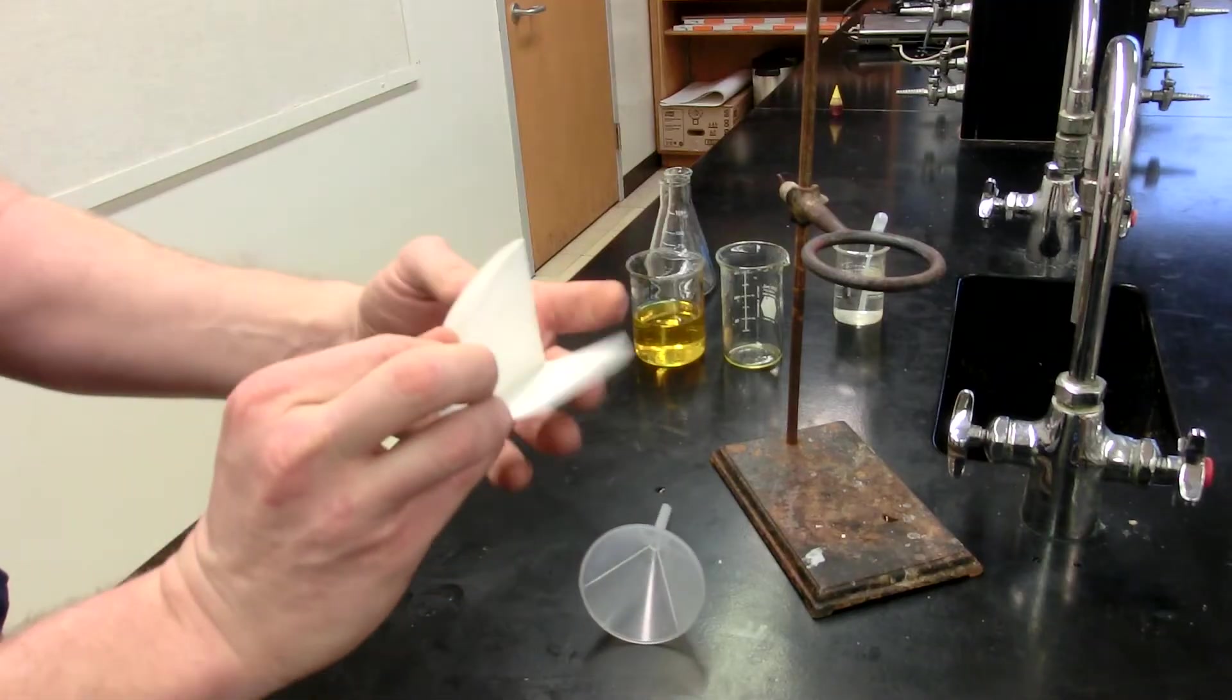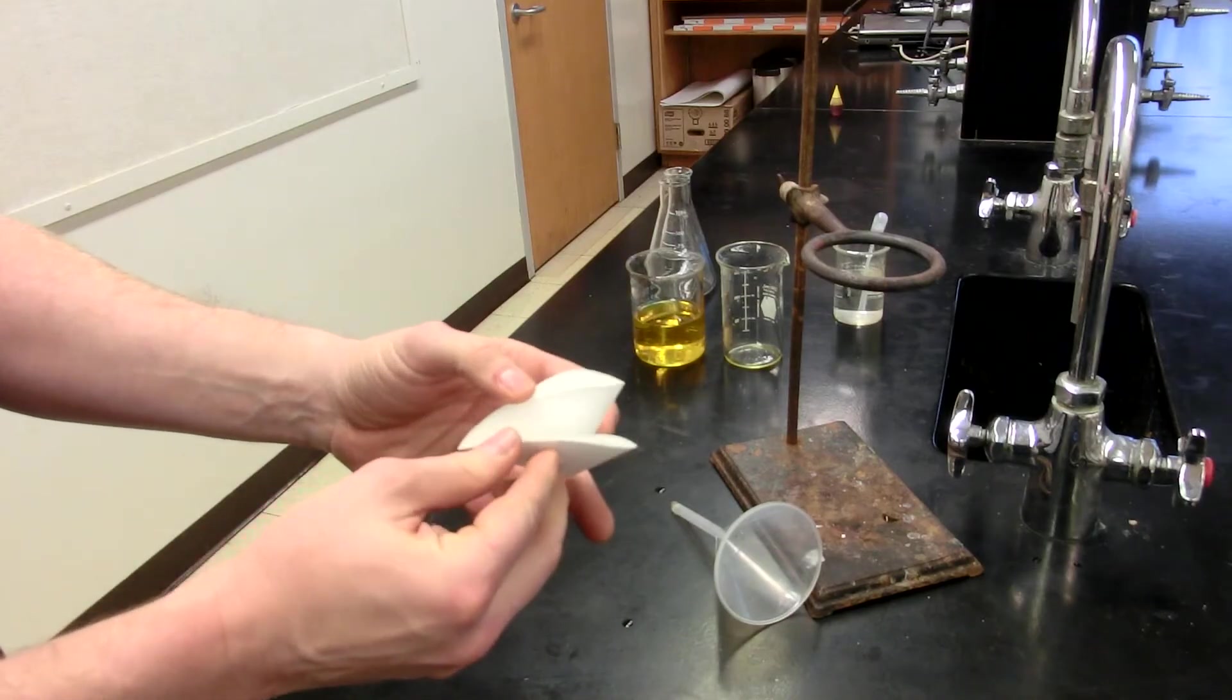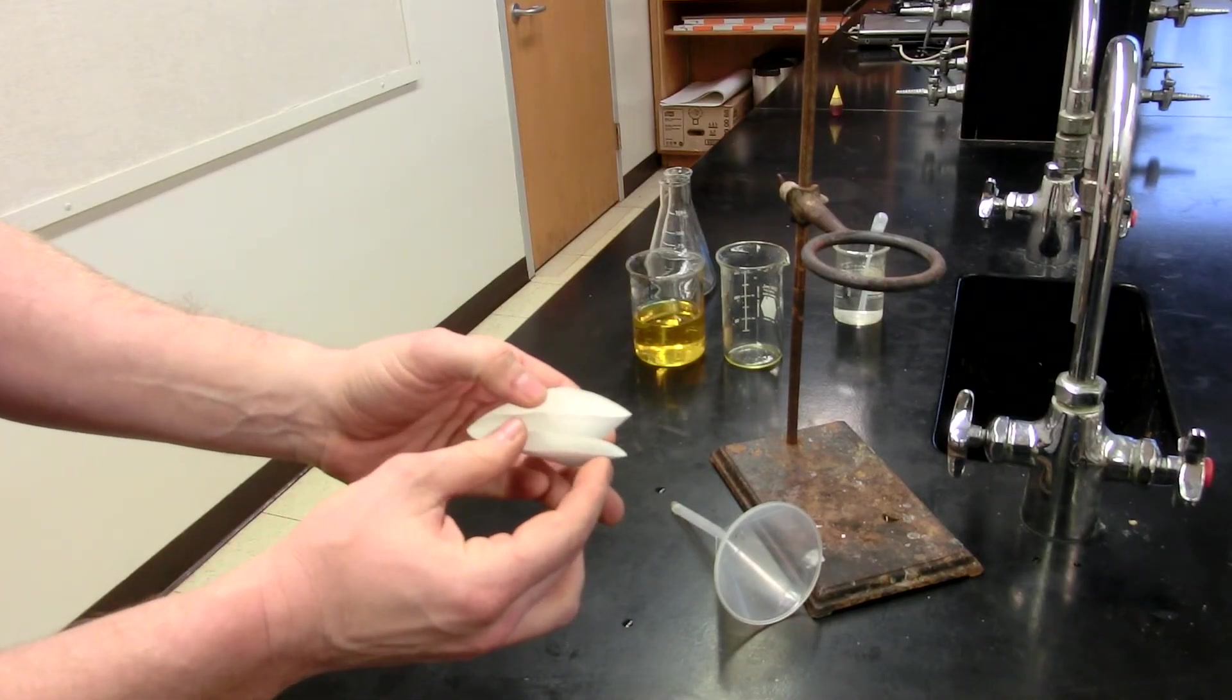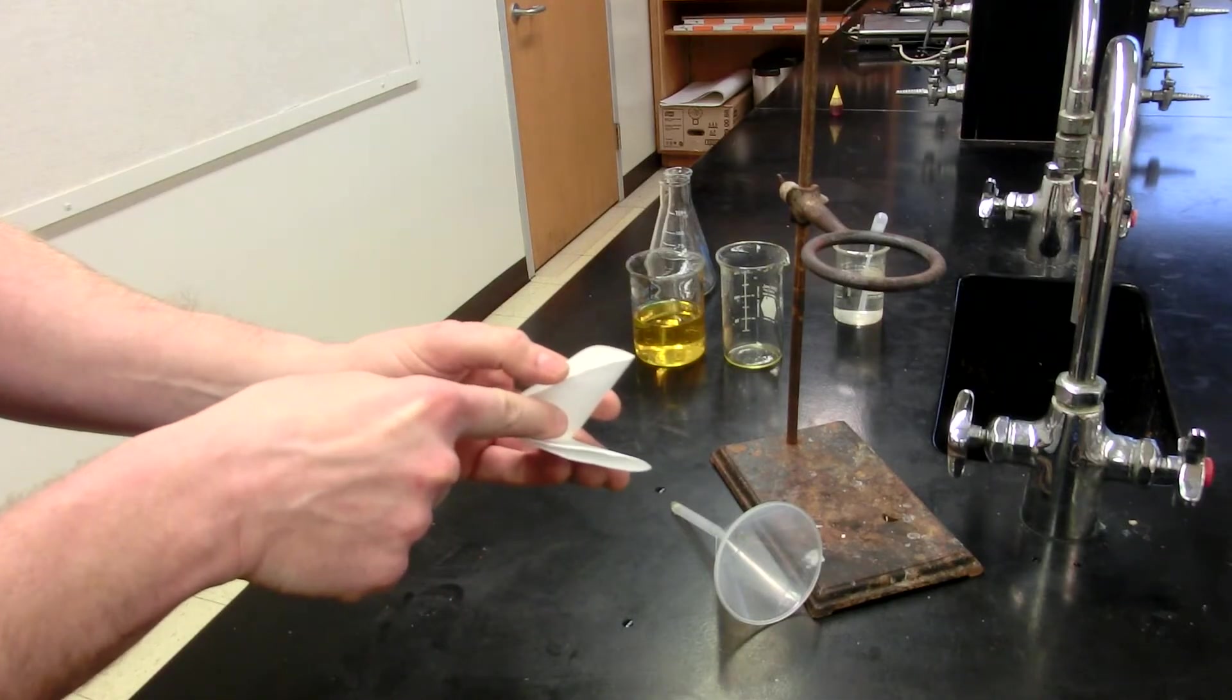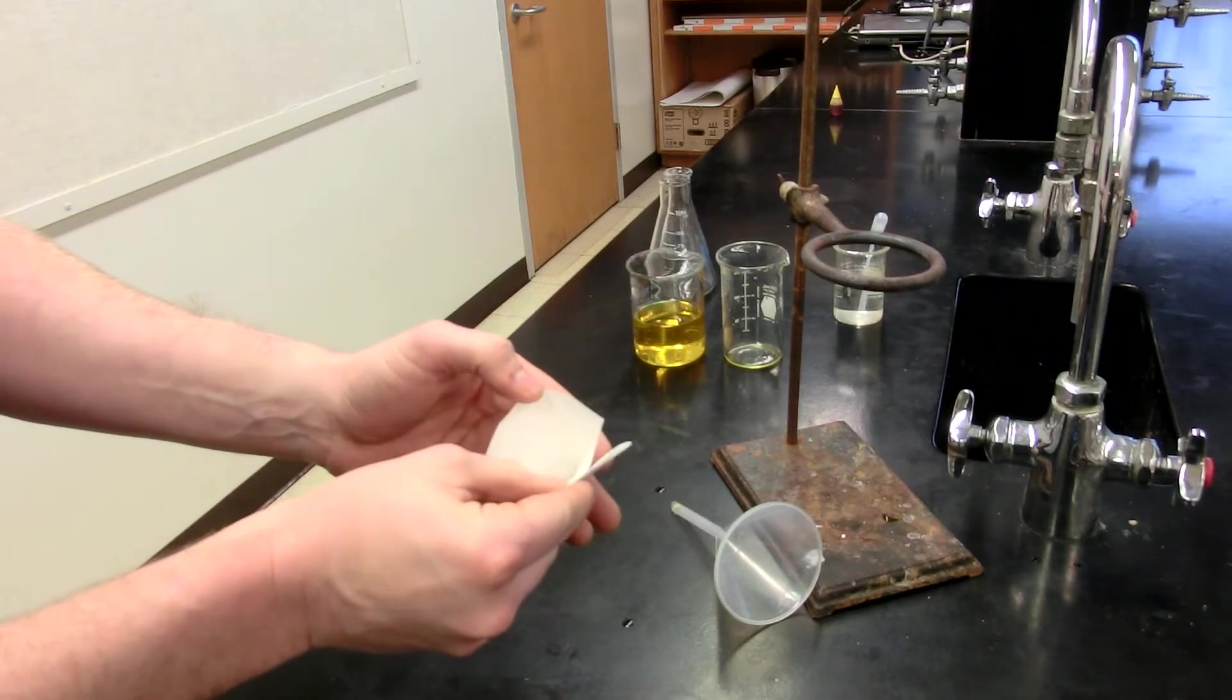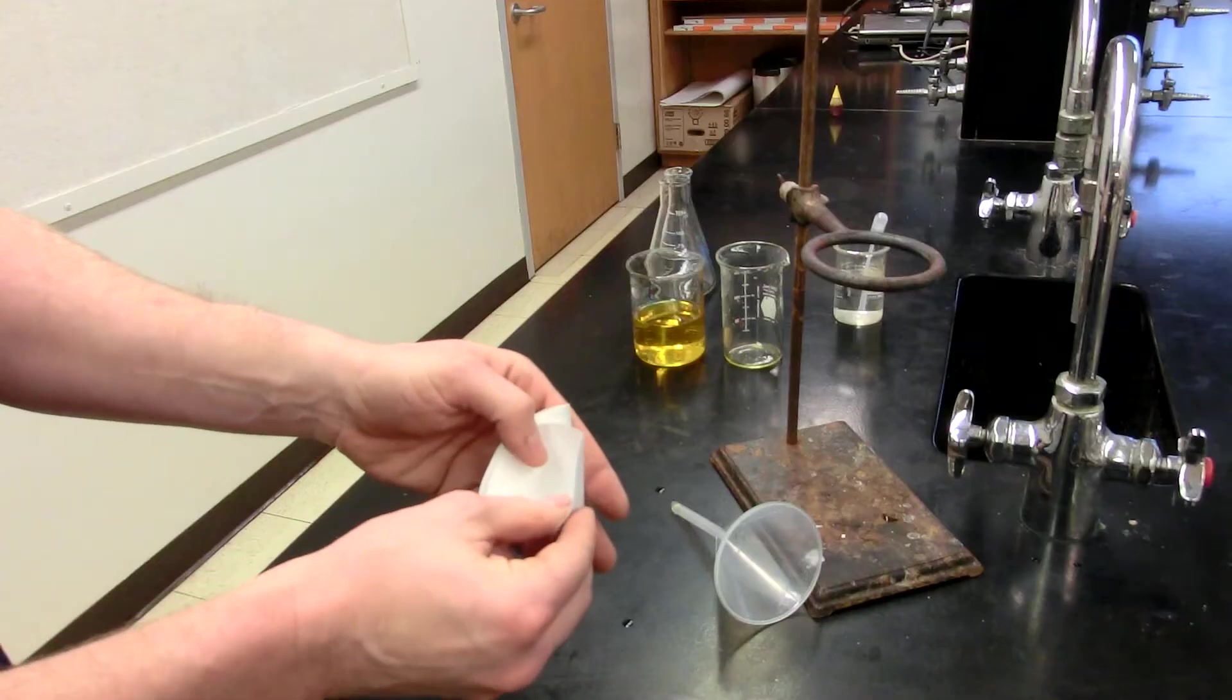What you want to do is you'll notice that now that I have this folded over twice, that I have pretty much four layers of paper. You do not want to put it in the funnel between layers two and three. You want to go between, let's say, one and two or between three and four.